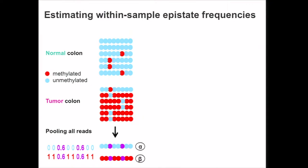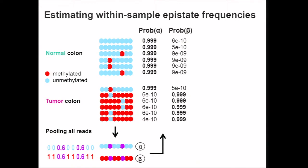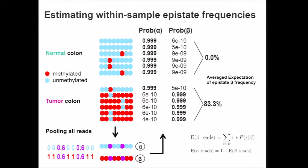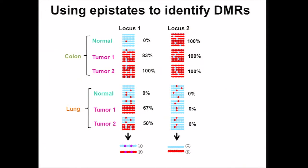The method also gives us the posterior probability of a read being originated from either one of the two epistates. In the normal sample, all the reads are likely to be originated from the unmethylated epistate, whereas most of the tumor reads are from the methylated epistate. We compute the average of this probability — called epistate frequency — and for the methylated epistate beta, the normal sample has almost 0% while the tumor sample has 83%. We then use epistate frequency to identify differentially methylated regions.